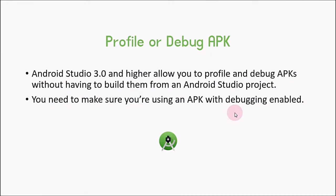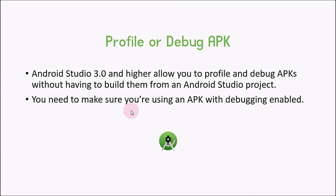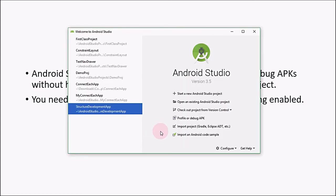The next thing is Profile or Debug APK. Android Studio 3.0 and higher allows you to profile and debug APKs without building them from the Android Studio project. If you have an APK stored on your hard drive and you want to debug it, you can use this option. Simply click on it and choose where you have stored that APK file. Make sure the APK file you are going to debug has debugging enabled.